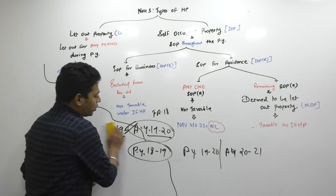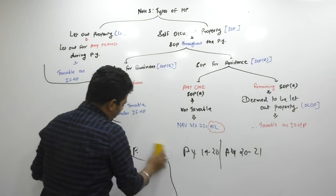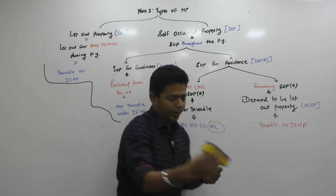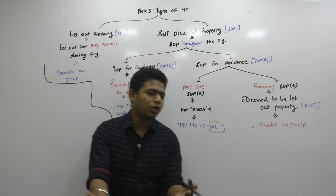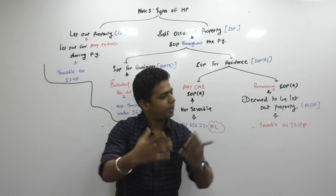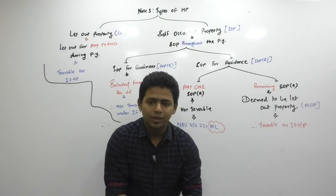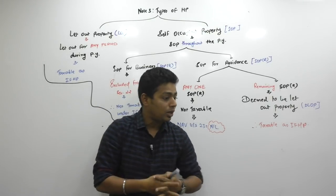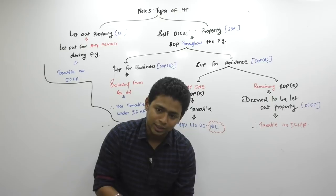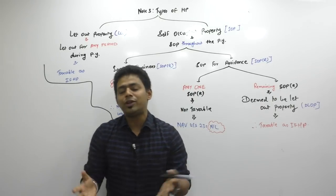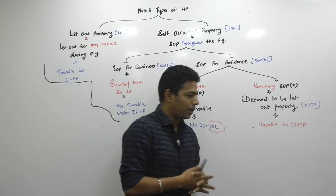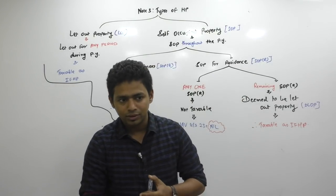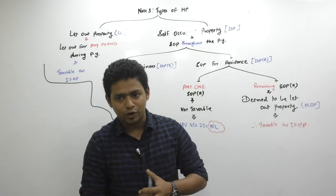I would like to say certain things about this assessment year 19-20. Every year — 18-19 was an assessment year, 17-18 was also an assessment year, 19-20 is assessment year, 20-21 will be assessment year. Every financial year is a new assessment year. What is the speciality of this assessment year 19-20? Come on, tell me — there is something special.